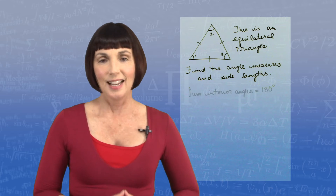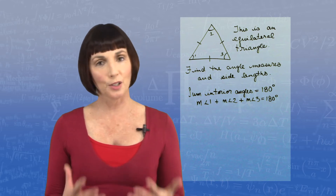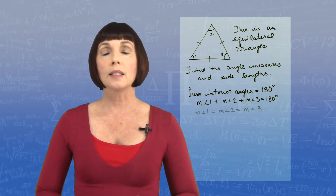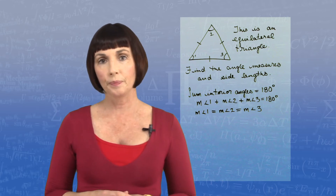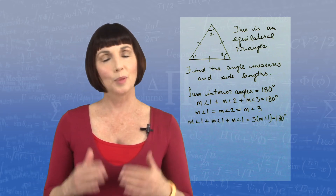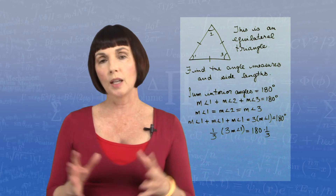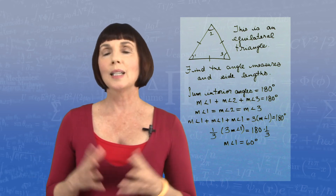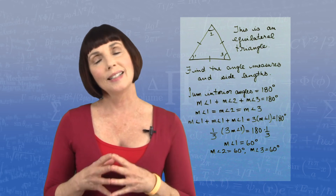Okay, let's take a look. The sum of the interior angles equals 180 degrees, so the measure of angle 1 plus the measure of angle 2 plus the measure of angle 3 equals 180 degrees. But this is an equilateral triangle, meaning the measure of angle 1 equals the measure of angle 2 equals the measure of angle 3. So we can rewrite our equation as 3 times the measure of angle 1 equals 180 degrees. Multiplying both sides by one-third, we get that the measure of angle 1, angle 2, and angle 3 each equal 60 degrees.